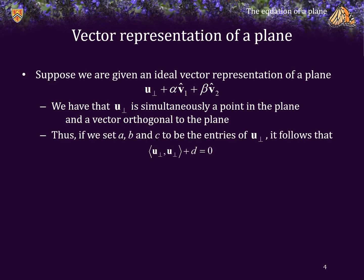Thus, if we set A, B, and C to be the entries of U perp, then it follows that the inner product of U perp and itself plus D must equal 0. After all, the coefficients A, B, and C are the entries of U perp, while also U perp is a point on the plane.